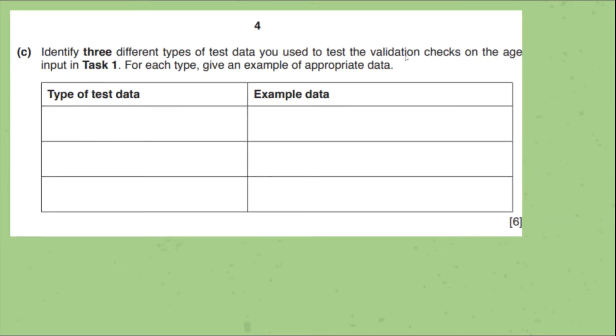So another most common question is they either ask you to mention how you validate this task or they tell you to write the type of test data. So there are 4 types of test data. They are abnormal data, normal data, boundary data and extreme data. Let's see what are those in detail and with an example.